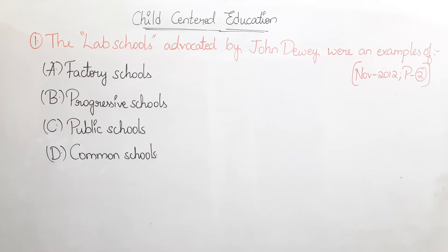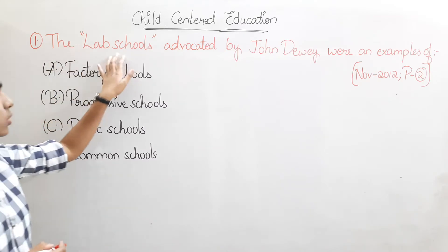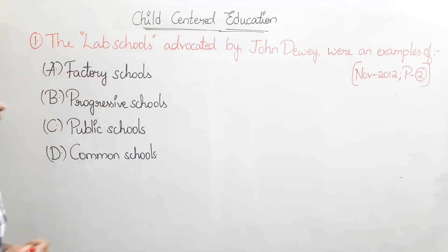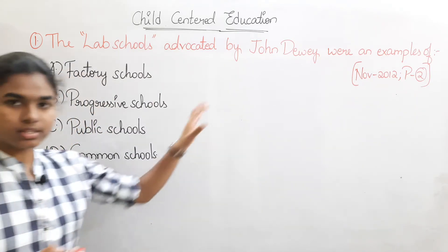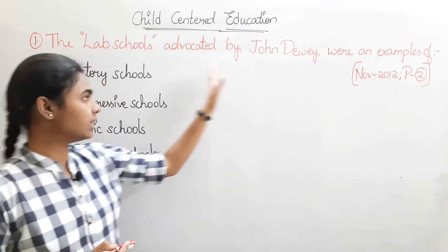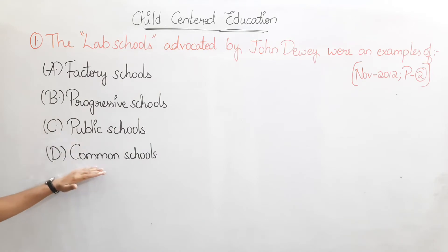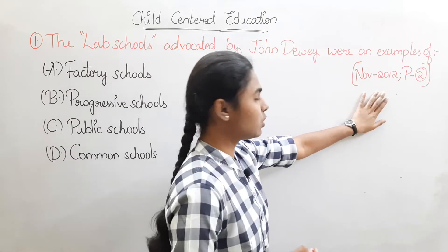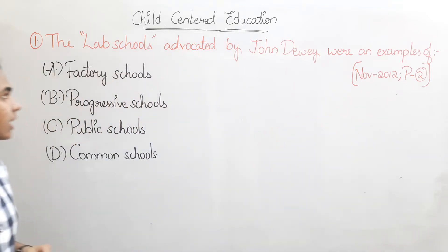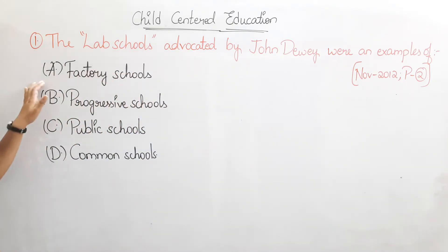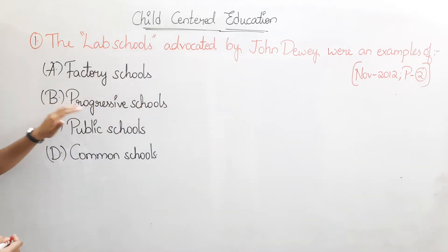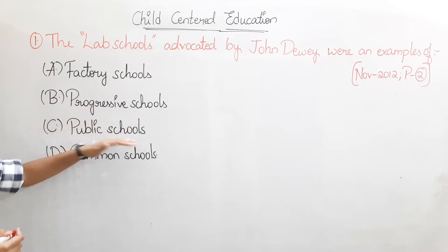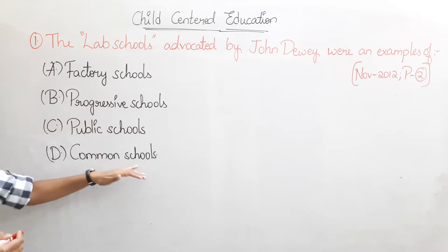The first question is: the lab schools advocated by John Dewey were an example of what? This is from November 2012, Paper 2. The options are: Option A — Factory schools, Option B — Progressive schools, Option C — Public schools, Option D — Common schools.